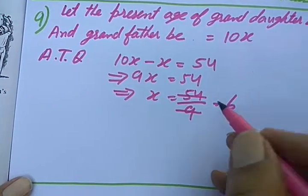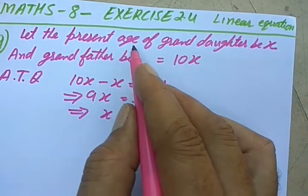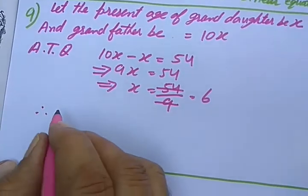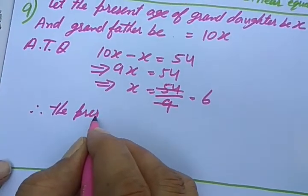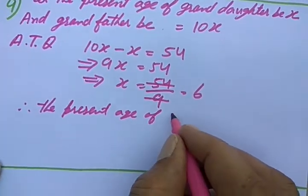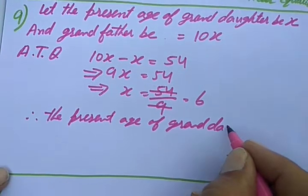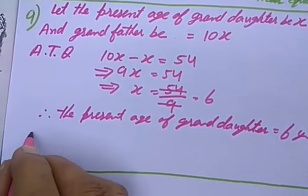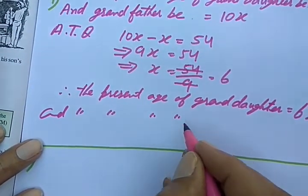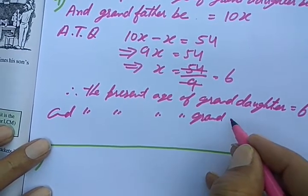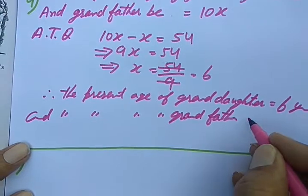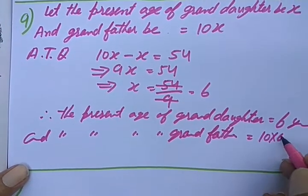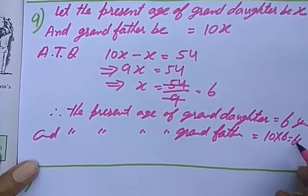So, 6 is the value of X, the present age we have taken for the granddaughter. Therefore, the present age of granddaughter is 6 years and the present age of grandfather is 10 times. So, 10X means 10 into 6 should give you 60 years.